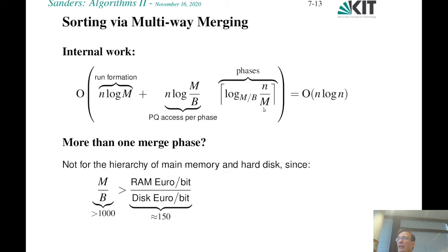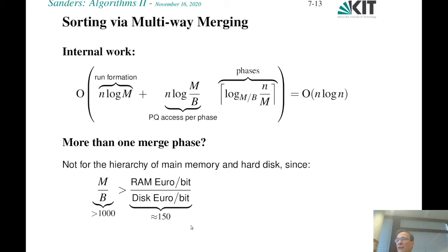There may be other situations with additional constraints, or when looking at different levels of the memory hierarchy. For example, a processor's L1 cache must be very close to the processing unit for low latency, so it can't be made very large. The ratio between L1 cache size and main memory size can be much larger than 1000. For example, we have a machine in our working group with a terabyte of memory, and its L1 caches are 32 kilobytes — a ratio of much more than a million. Then you have to be careful.